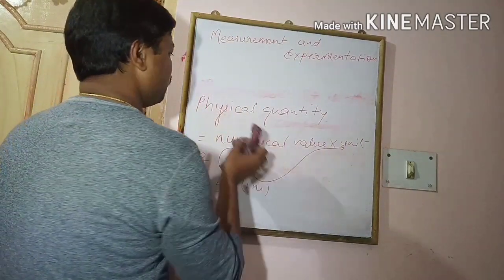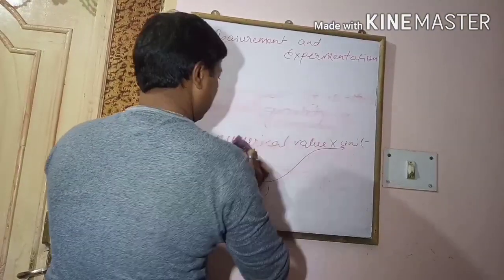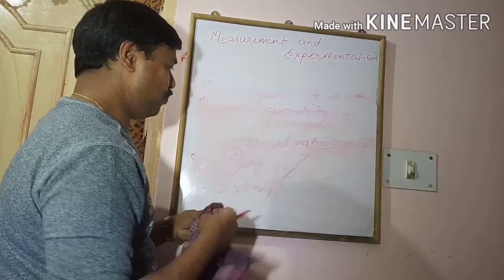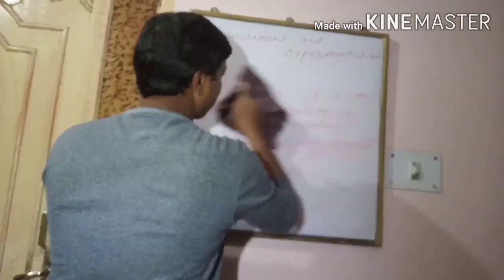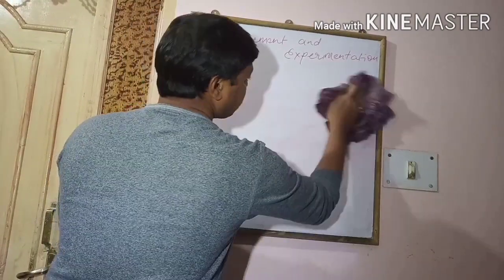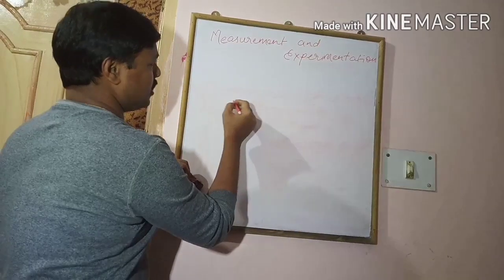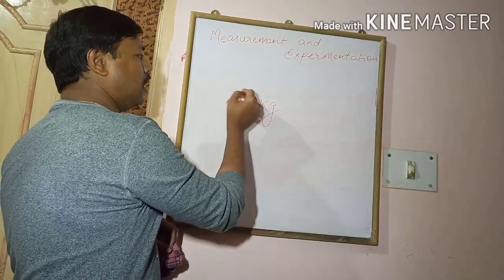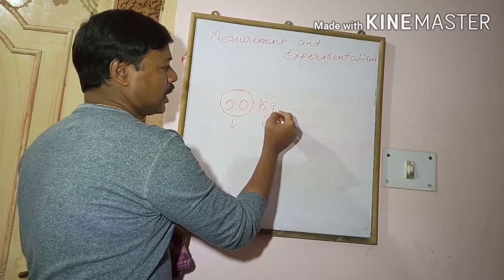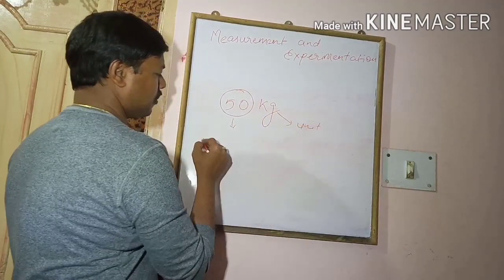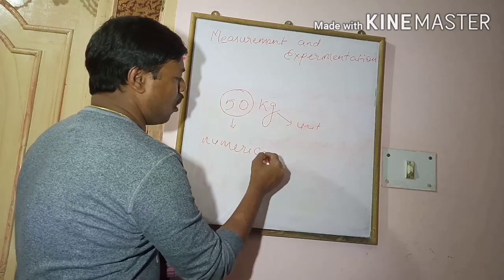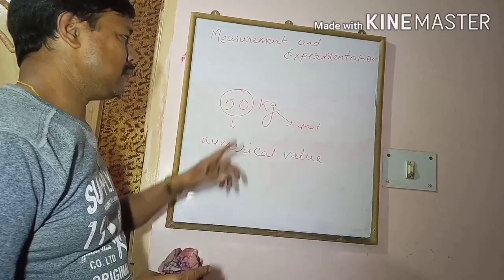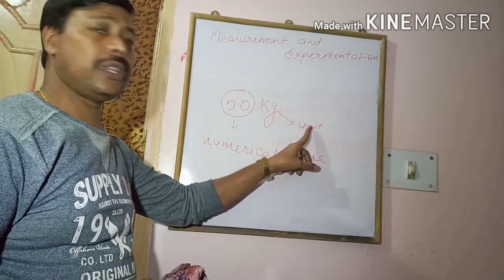Similarly, we can express other physical quantities like mass, volume, density, etc. For example, the mass of a boy is 50 kilogram — here 50 is the numerical value and kilogram is the unit. So we always express a physical quantity as a numerical value along with a unit.